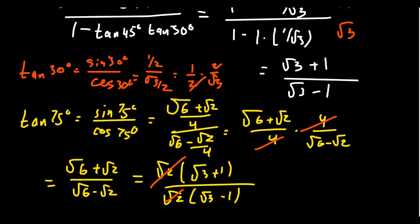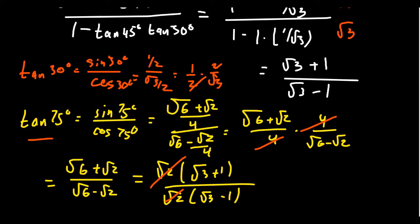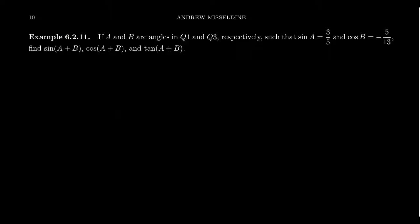So the answers do turn out to be the same. In the second approach, we recognized that tangent is sine over cosine, then used the angle sum identities to compute sine of 75 and cosine of 75. In the first approach, we used the angle sum identity for tangent directly. When computing the angle sum of tangent, you don't actually need the tangent sum formula — you can get it from sine and cosine since tangent is sine over cosine. Whatever approach is easiest is appropriate.